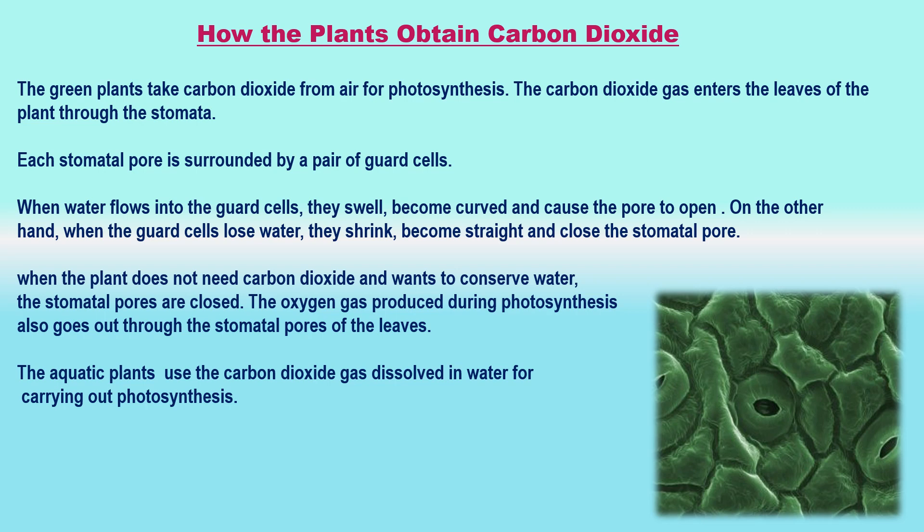The oxygen gas produced during photosynthesis also goes out through the stomatal pores of the leaves. In addition to leaves, stomata are also present in the green stems of a plant, so green stems also carry out photosynthesis. Stomata allow the movement of gases in and out of plant cells — in other words, gaseous exchange in plants takes place through stomata. In most broad-leaved plants, stomata occur only on the lower surface of the leaf, but in narrow-leaved plants, stomata are equally distributed on both sides. Aquatic plants use carbon dioxide dissolved in water for photosynthesis.